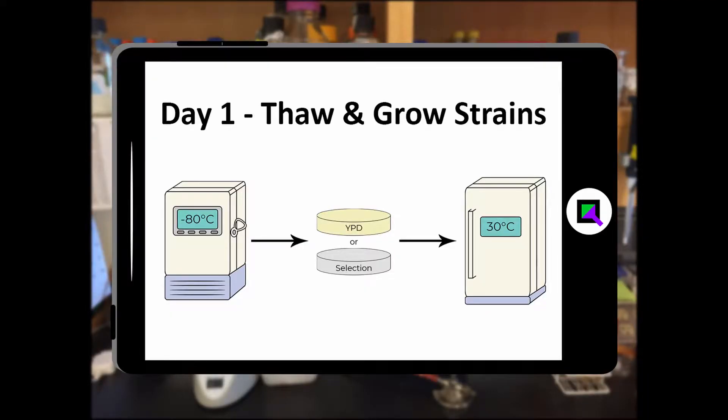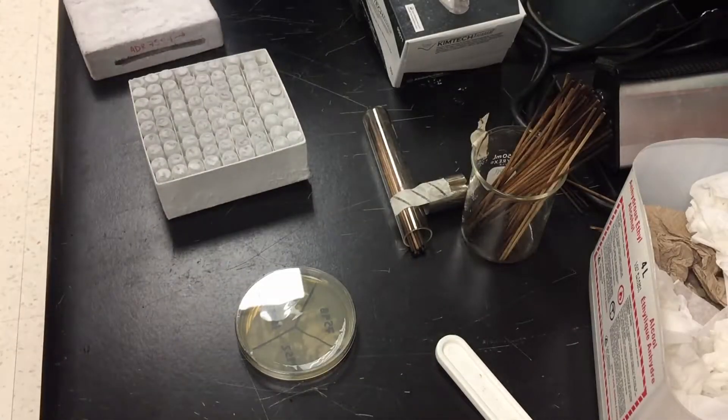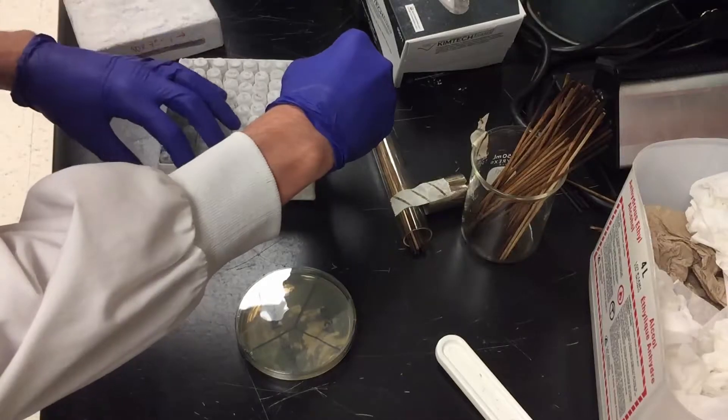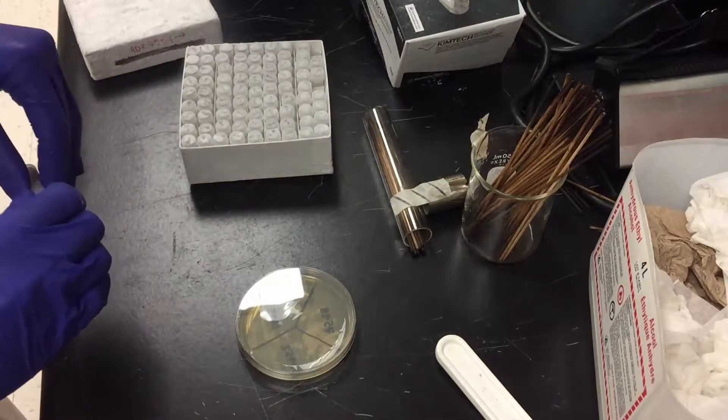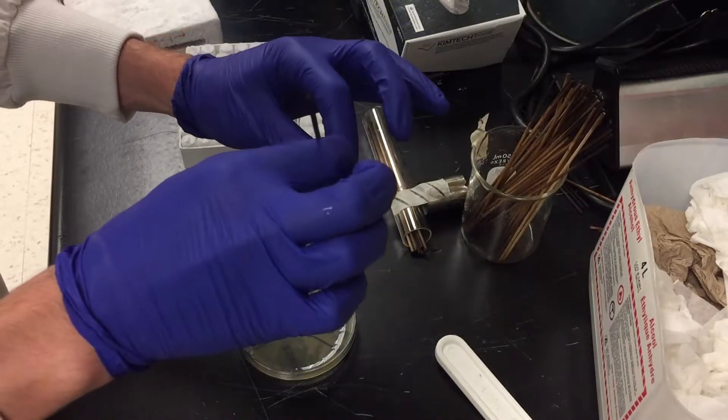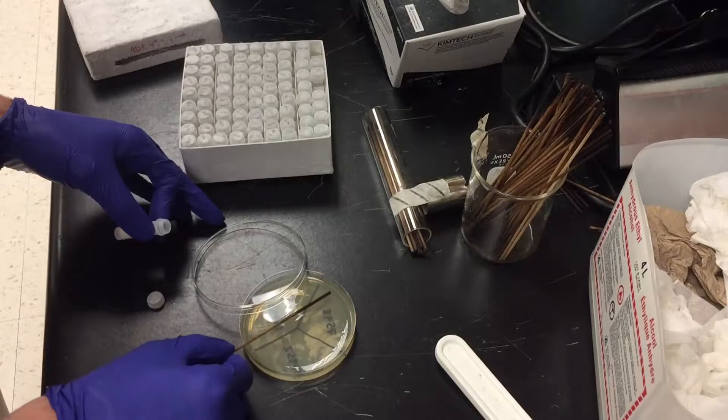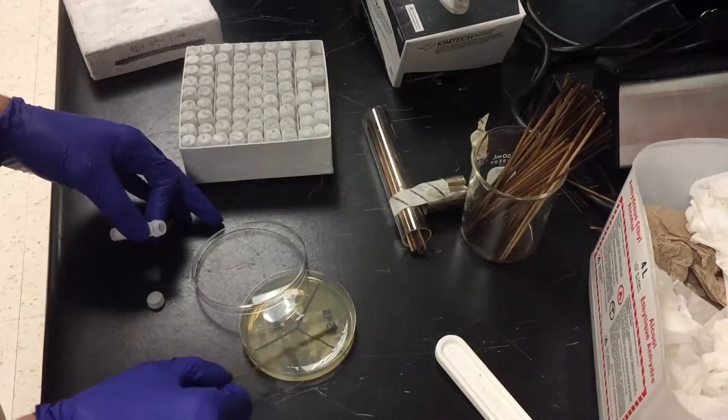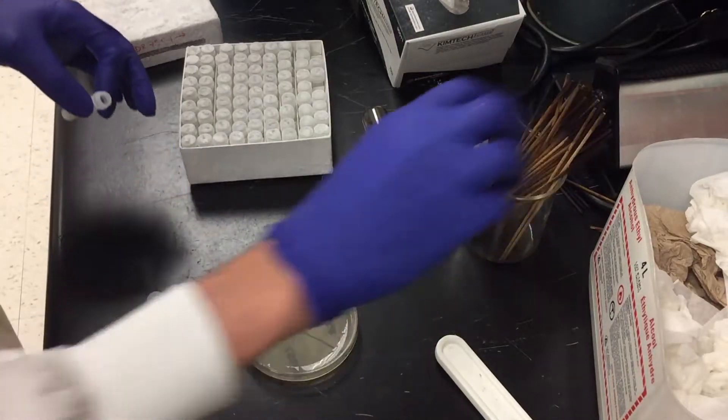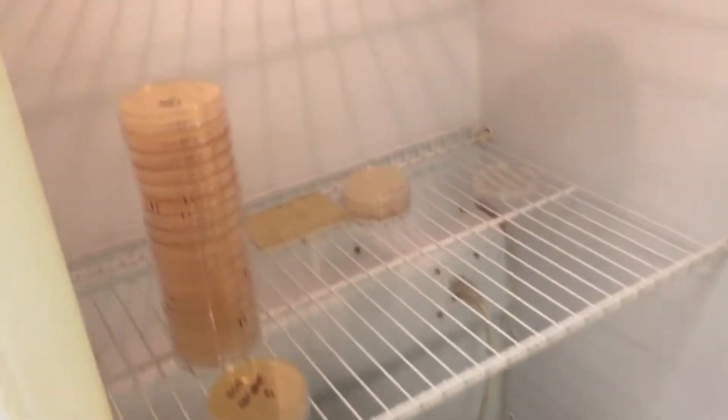Day one, thaw and grow strains. Get fresh cells out of the minus 80 for the transformation. Streak them onto YPD or selective media. Incubate at 30 degrees for about 24 hours.